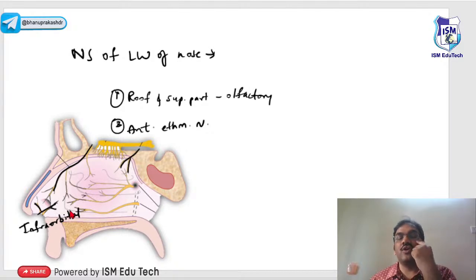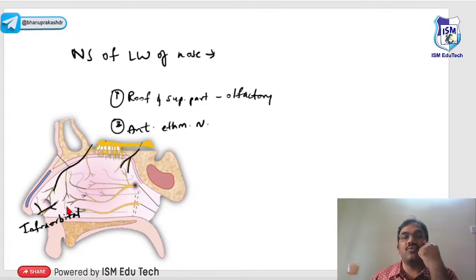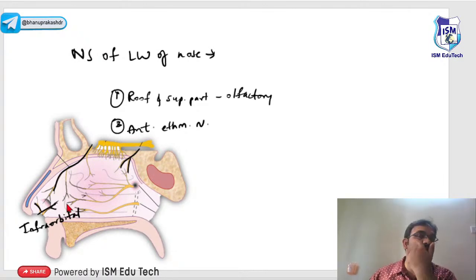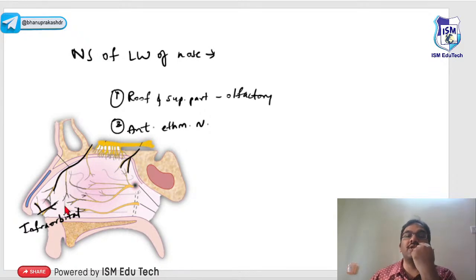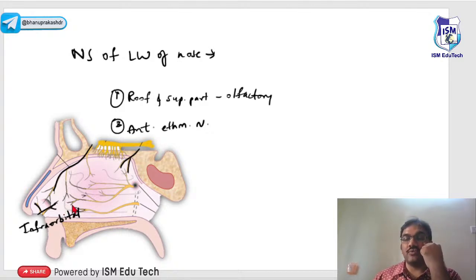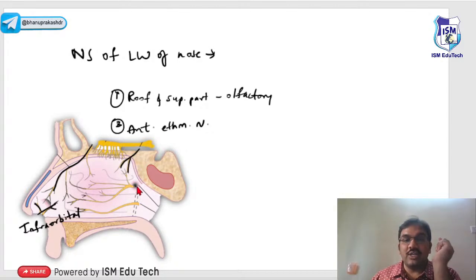You have already studied the infra-orbital nerve. The infra-orbital nerve and infra-orbital artery and vein run on either side and supply the vestibular area. When removing a Haller cell, you should be careful not to damage this nerve.